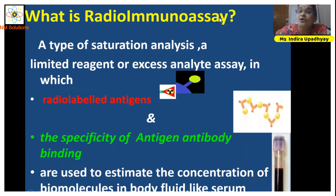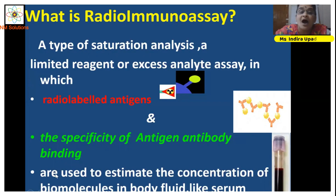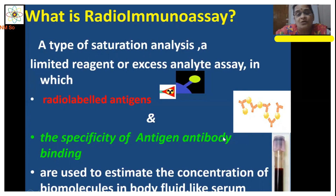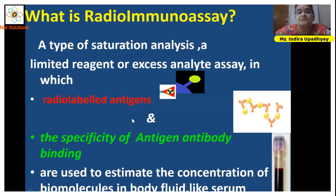Radioimmunassay is a type of saturation analysis — a limited reagent or excess analyte assay — in which radio-labeled antigens and the specificity of antigen-antibody binding are used to estimate the concentration of biomolecules in body fluid like serum. For example, if I want to estimate insulin, then insulin is the biomolecule. We talk about insulin as an antigen; otherwise it is not an antigen, but in this assay, within this context, it becomes an antigen.